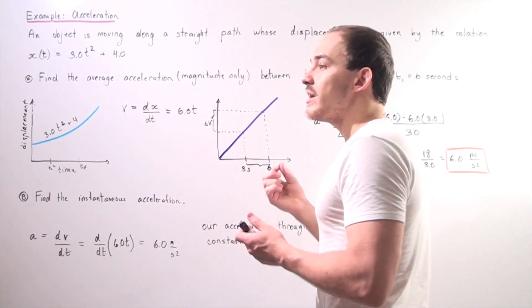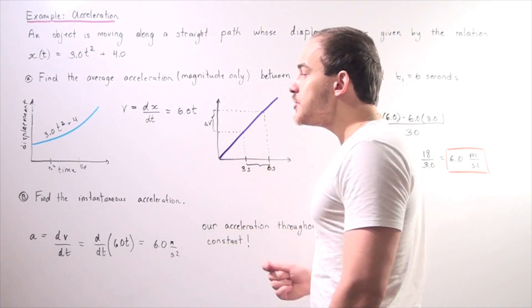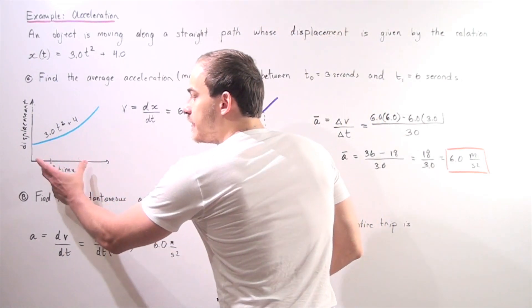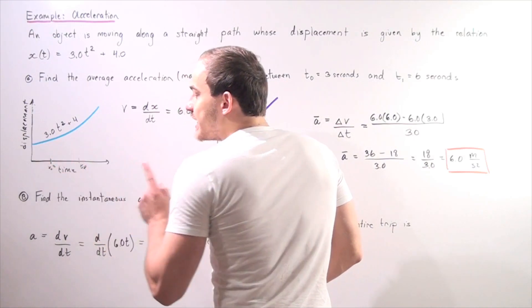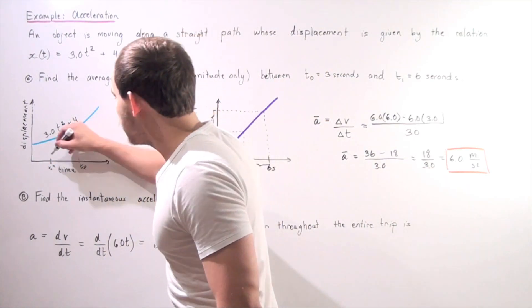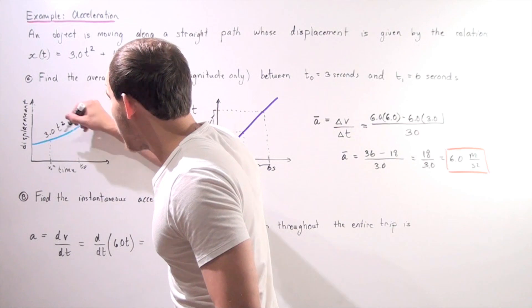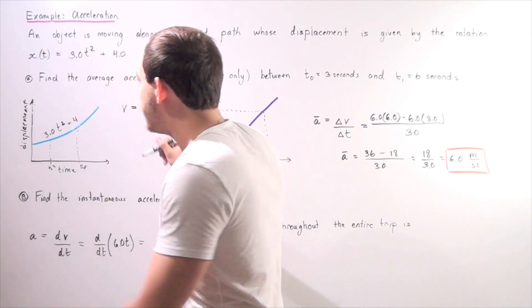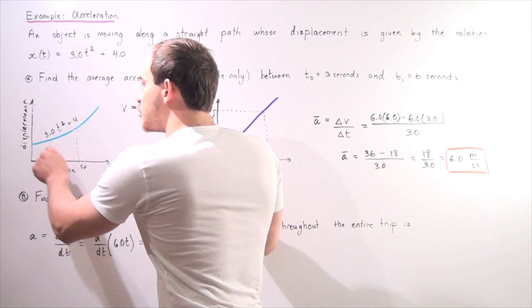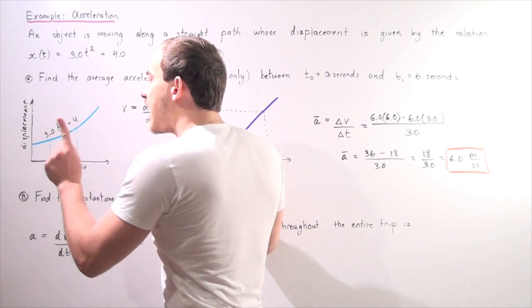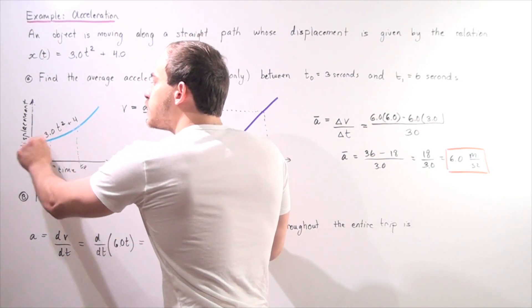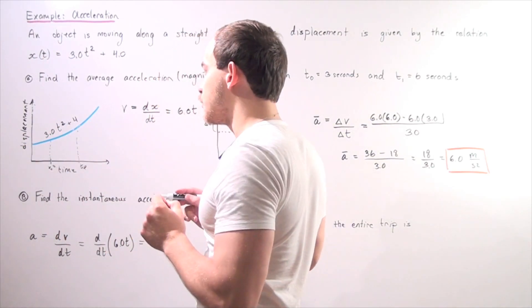And we want to find what our average acceleration is between this time interval. Now, notice if we simply draw our lines going upward and then find the corresponding values at these two points, that will give us the corresponding displacement values.